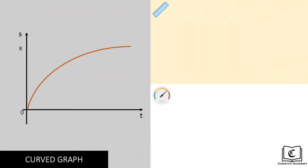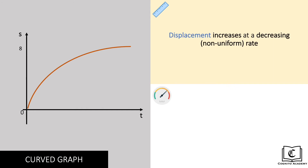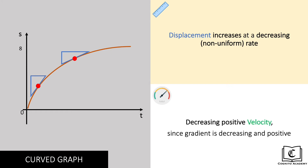Next up, we can see that displacement is also increasing here, but at a non-uniform decreasing rate. Let's look at the gradient. The gradient is positive but it's becoming gentler, meaning gradient is decreasing. Hence velocity is positive but decreasing.